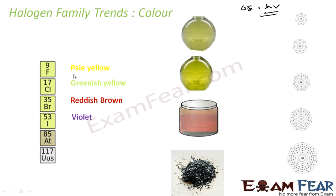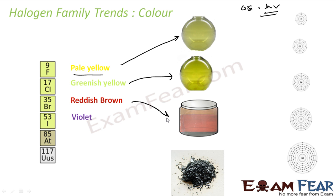Fluorine has a pale yellow color. Chlorine is a greenish-yellow color — the word chlorine came because of the color itself. Bromine has a reddish-brown color. And iodine, as mentioned, is a solid with a violet color. So fluorine, chlorine, bromine, and iodine all have different colors.